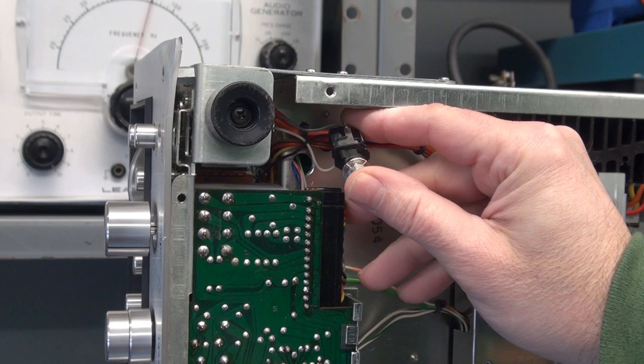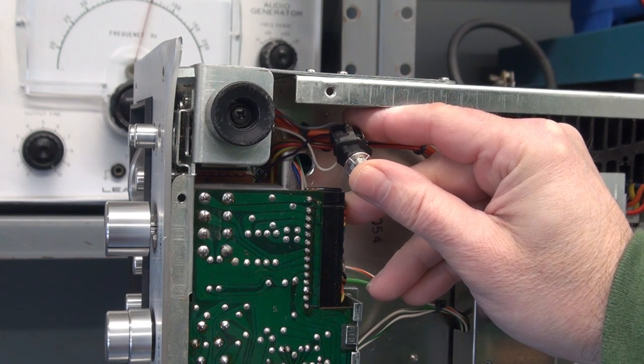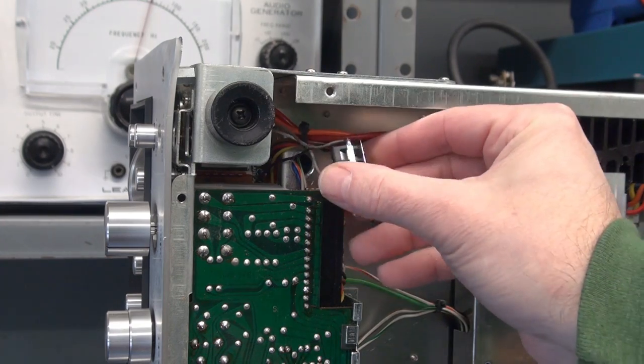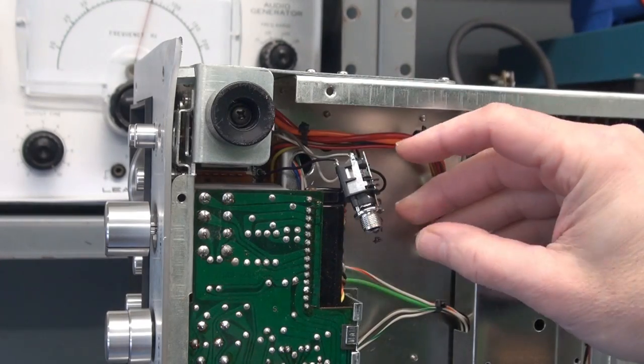This is a Neutrik jack, model number RJ5VM-S. The S means it has switching terminals, which you don't have to use in this application.